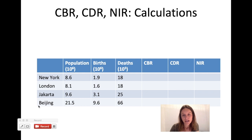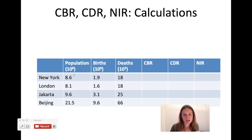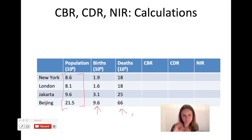We're going to do a practice problem with four cities: New York, London, Jakarta, and Beijing. I picked these because they're all different — in different parts of the world with different populations. The population numbers are true, using estimated populations as of 2017 or 2018. I totally made up the birth and death rates just for practice math, but there's one thing I want you to notice before we start.